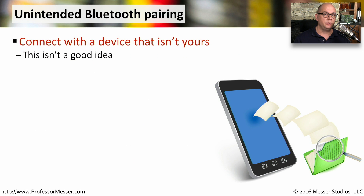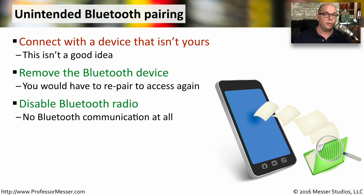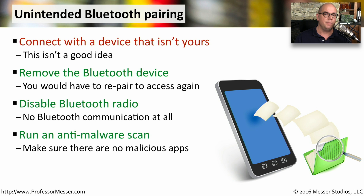One of the reasons that the Bluetooth pairing process requires an identification number is so that you can always be assured of what devices you're connecting to. You should never connect with a device that's not yours or one that you don't have direct control of. If you want to remove a Bluetooth device, you could always do that from your mobile phone or your tablet, and you would only need to repair if you wanted to access those two devices again. Another thing you could do temporarily is to disable the Bluetooth radio completely, and then you would not connect to any Bluetooth devices. And if you're very concerned that this might be caused by malware, it might be worthwhile to run an anti-malware scan on your mobile device.